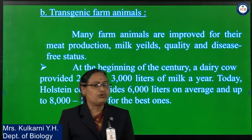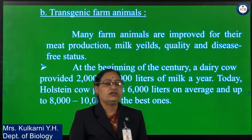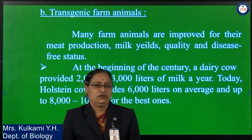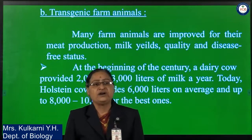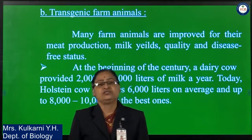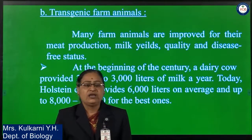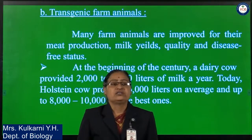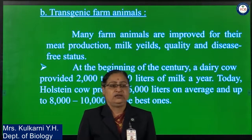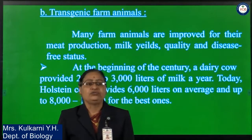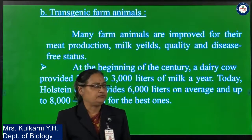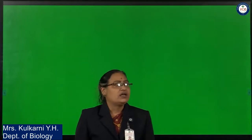Today, the Holstrain cow — remember this name, as it is asked in CAT or NEET exams — provides 6,000 to about 8,000–10,000 litres of milk per year. A hen used to lay about 70 eggs per year, but today it lays about 250 eggs per year.